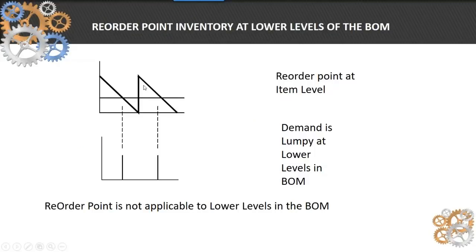So reorder point is fine at that top level, at the independent demand level. It works fairly regularly and you can put that reorder point calculation at the end item in 1.4.7 or 1.4.17, your item planning data. However, for lower level items, the demand is lumpy.